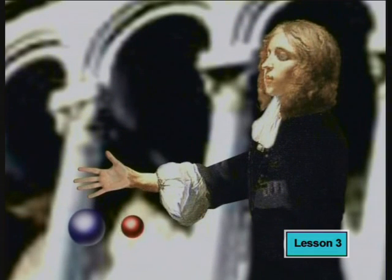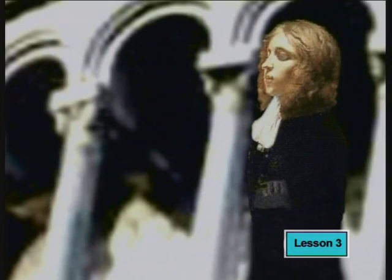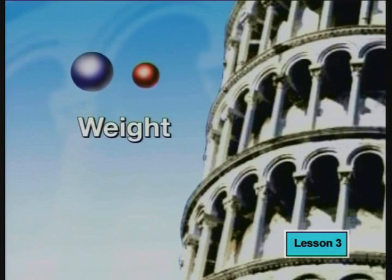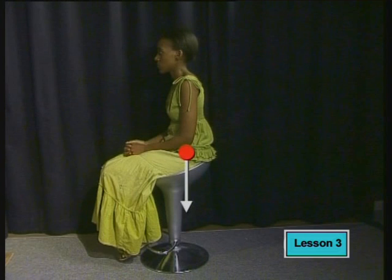Now let's examine the forces that act on me when I sit on a chair, to see if we can identify the normal force. We will do this by drawing a free body diagram of this situation. Remember, the center of gravity of my body is represented by a dot, and we draw the forces that act on me on that dot. All objects on earth are attracted to the earth, and we call this force of attraction of the earth on a body the body's weight. So we can draw in the force of the earth acting on my body and label it weight.